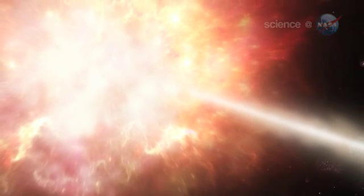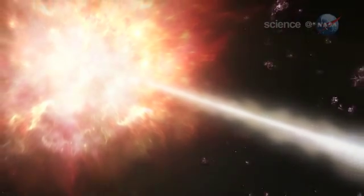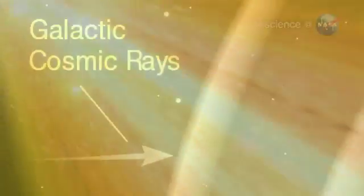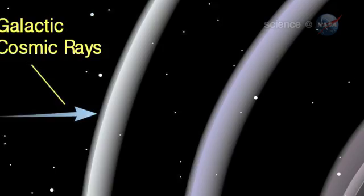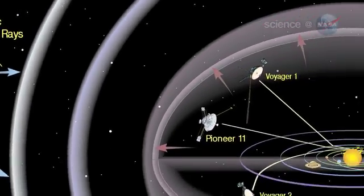One consequence has to do with cosmic rays. Cosmic rays are subatomic particles accelerated to nearly light speed by distant black holes and supernova explosions. When these microscopic cannonballs try to enter the solar system, they have to fight through the Sun's magnetic field to reach the inner planets.